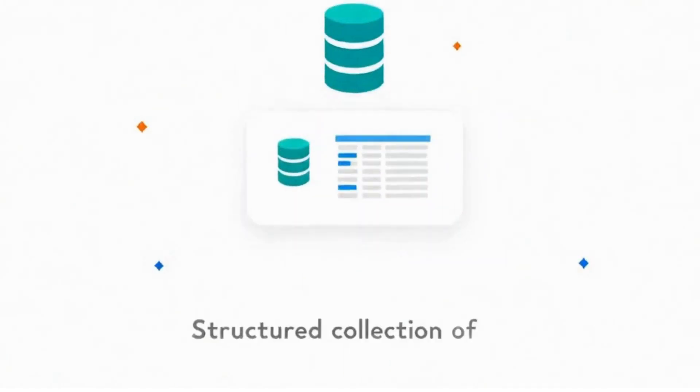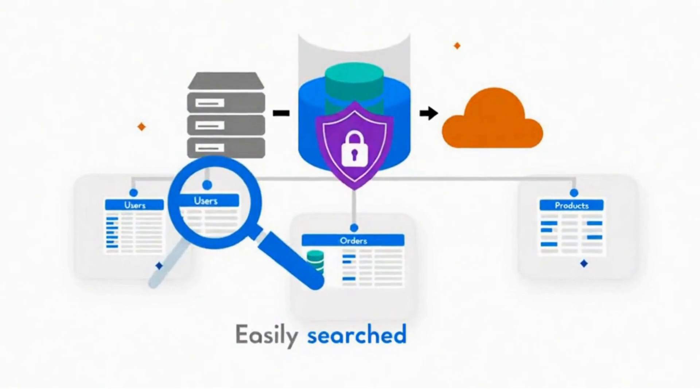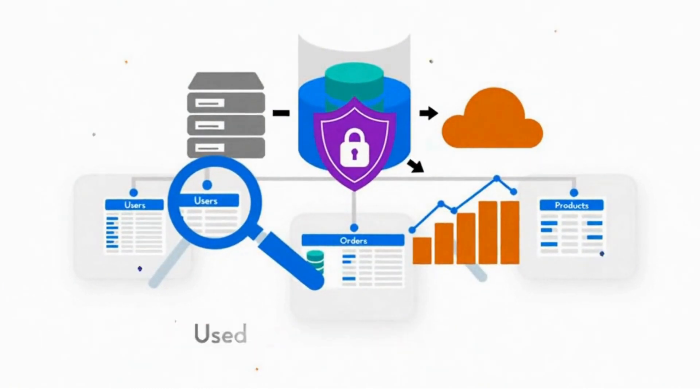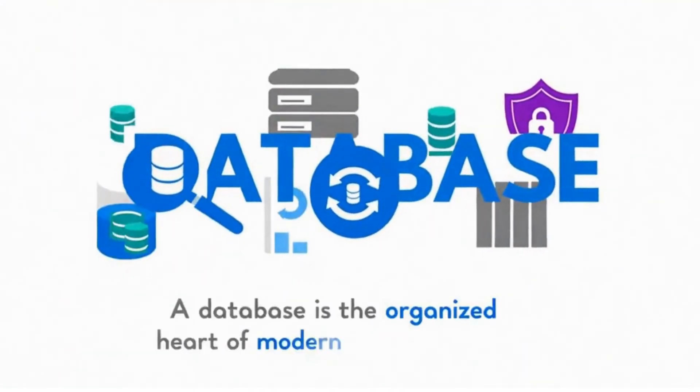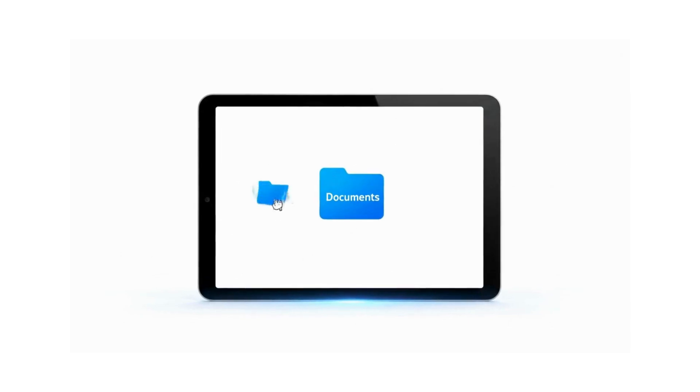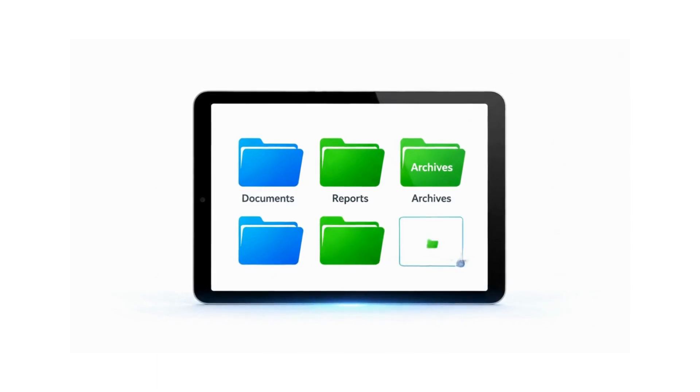What is a database? Before we jump into the types, let's understand what a database actually is. Think of a database as a digital filing cabinet. Just like you organize papers in folders and drawers, a database organizes information in a structured way that makes it easy to store, find, and use later.